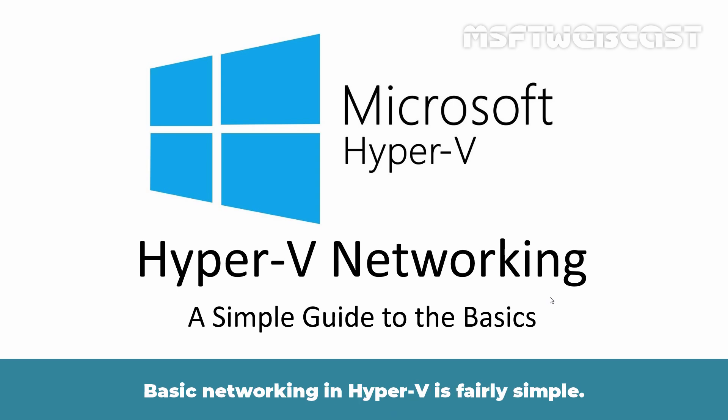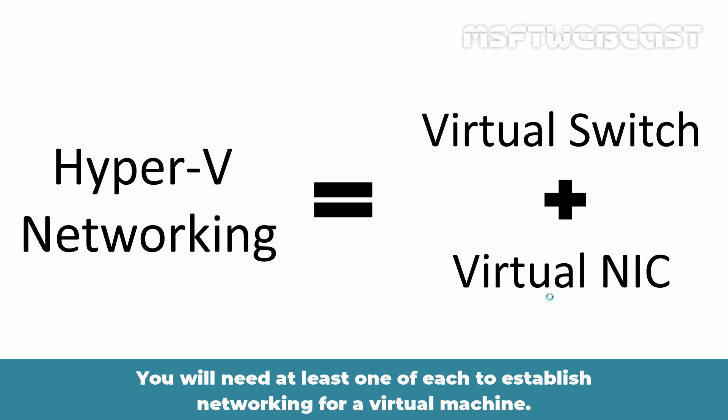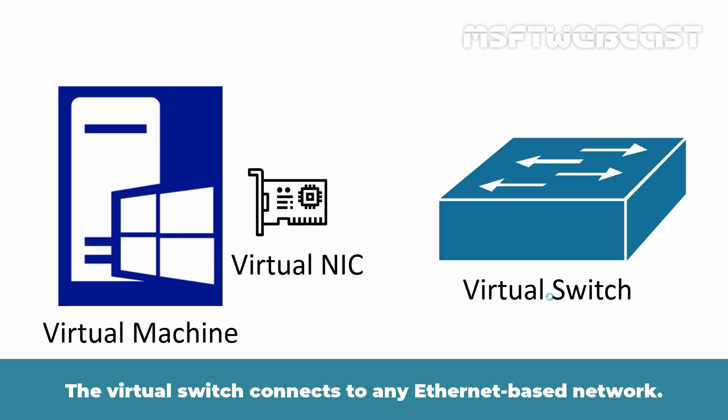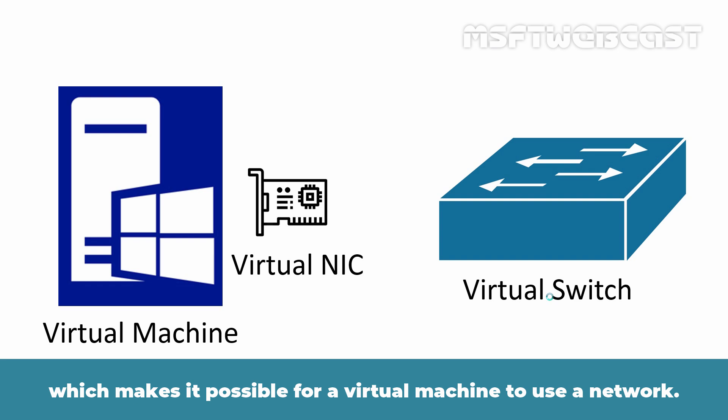Basic networking in Hyper-V is fairly simple. It uses two parts: a virtual switch and a virtual networking adapter. You will need at least one of each to establish networking for a virtual machine. The virtual switch connects to any Ethernet-based network. The virtual network adapter connects to a port on the virtual switch, which makes it possible for a virtual machine to use a network.